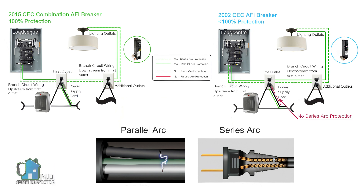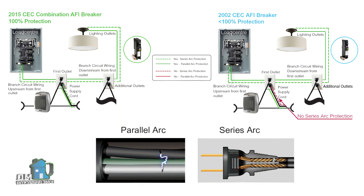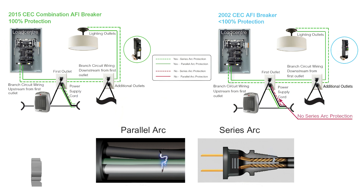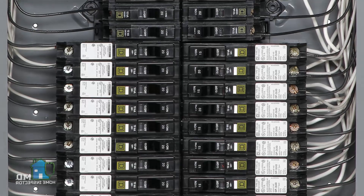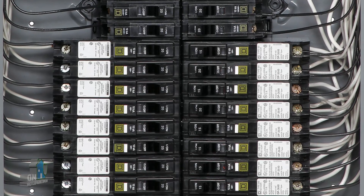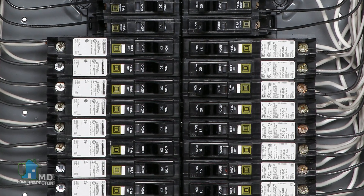The 2015 combination arc fault breaker protected both parallel and series arcs for the entire circuit, including branch cords connected to outlets. For reference, series arcs result from a broken wire creating a small gap that can lead to an arc, while parallel arcs occur between the hot and neutral to ground.